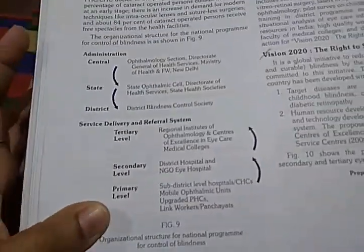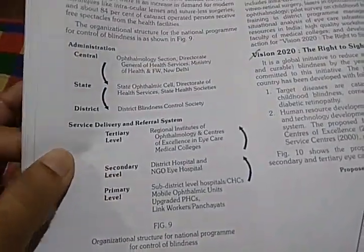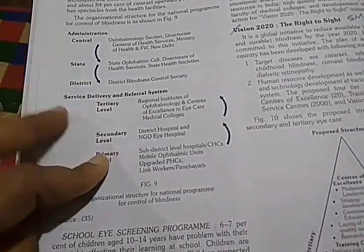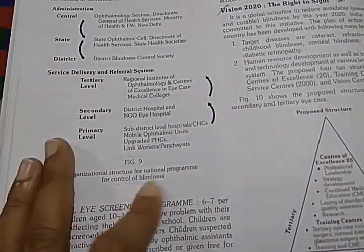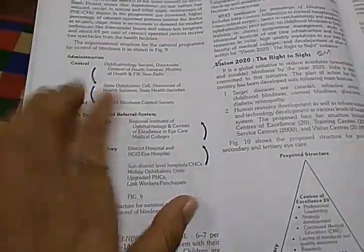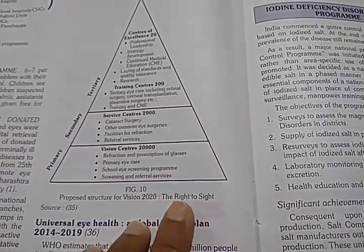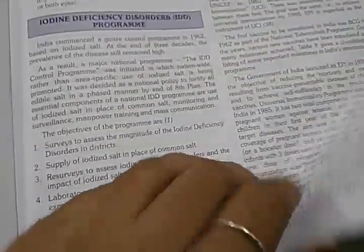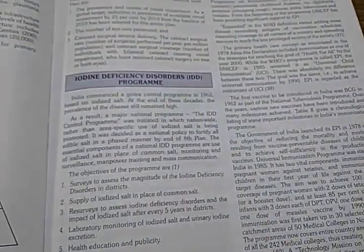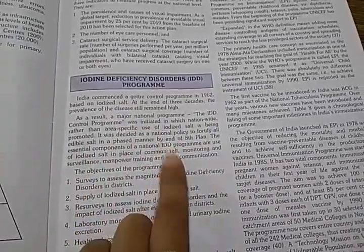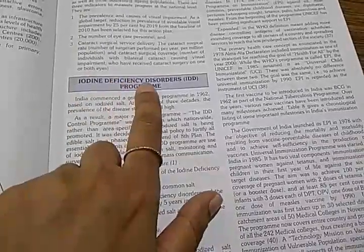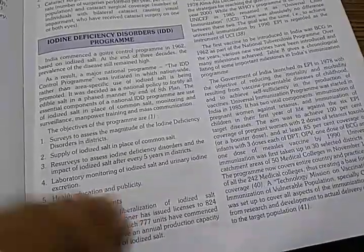The administrative control structure for the National Program for Control of Blindness covers tertiary, secondary, and primary levels — organizational structure you should know. There is also the proposed structure for Vision 2020 — The Right to Sight — which is asked even in ophthalmology. Then the Iodine Deficiency Program — IDD stands for Iodine Deficiency Disorder — wherever you see IDD, know it means iodine deficiency disorder, and the national program becomes NPIDD.